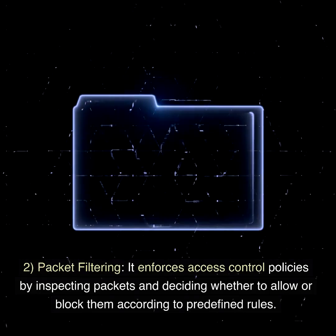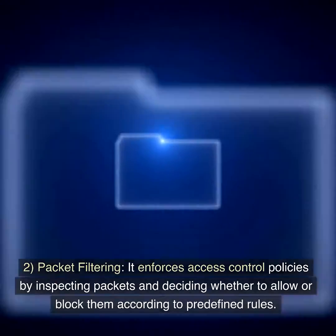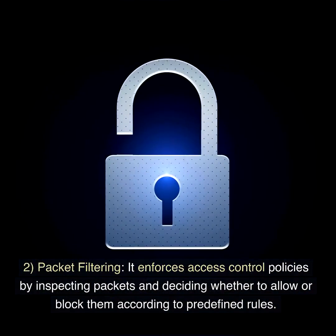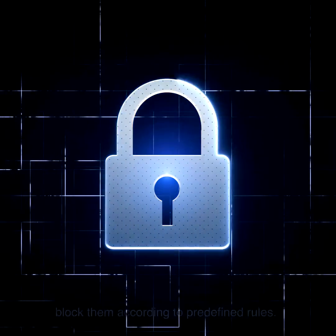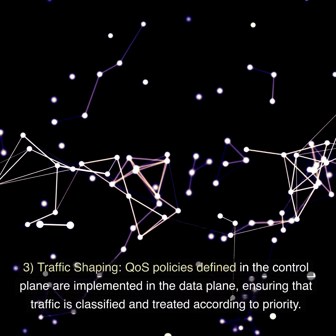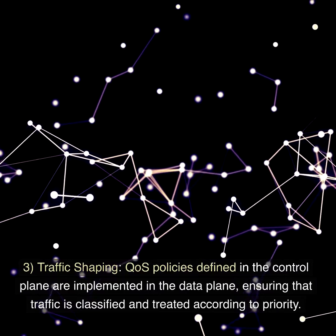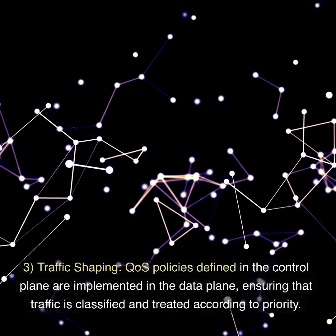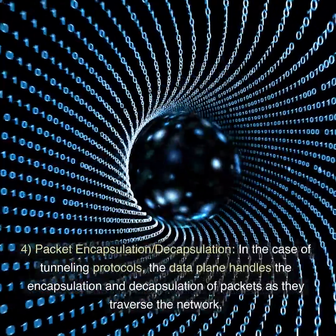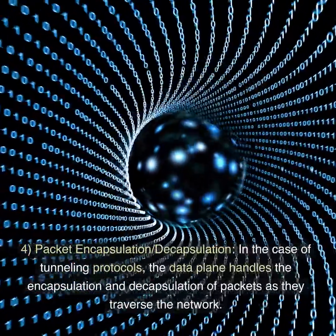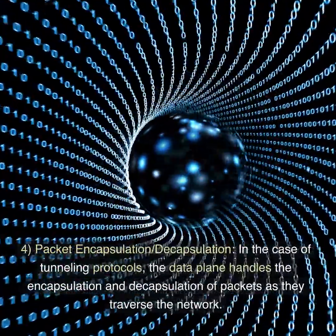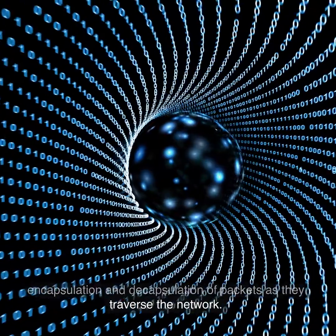2. Packet filtering. It enforces access control policies by inspecting packets and deciding whether to allow or block them according to predefined rules. 3. Traffic shaping. QoS policies defined in the control plane are implemented in the data plane, ensuring that traffic is classified and treated according to priority. 4. Packet encapsulation and decapsulation. In the case of tunneling protocols, the data plane handles the encapsulation and decapsulation of packets as they traverse the network.